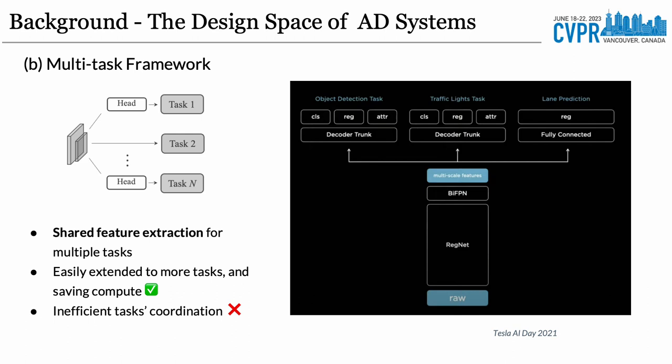The multi-task framework has a shared feature extraction for multiple tasks, which makes it adaptable to more tasks and conserves computing resources. Nonetheless, the separation of task heads often leads to inefficient coordination among tasks.